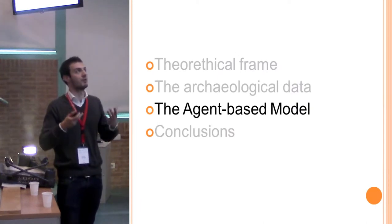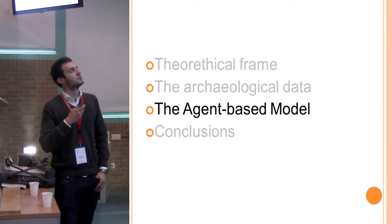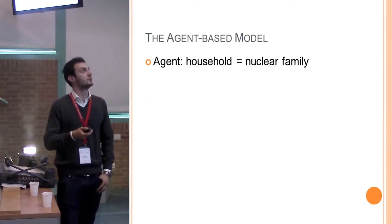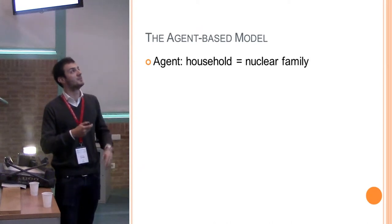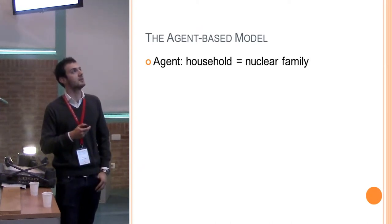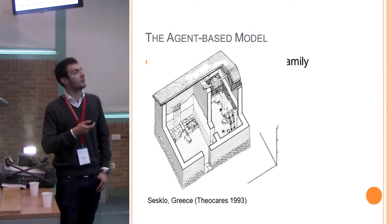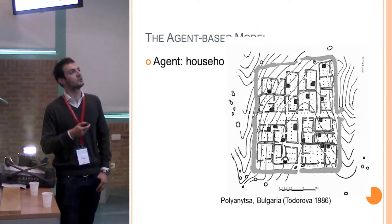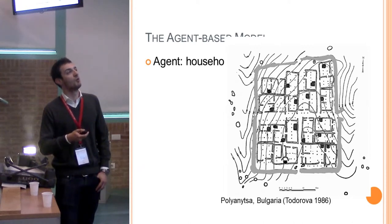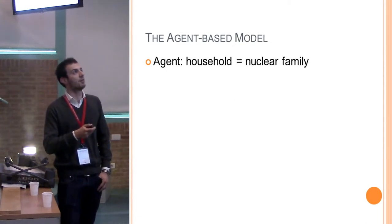I will now describe the core of my work: the agent-based model. The agent chosen to represent is a household. The household is the basic unit that can be found in the archaeological evidence. In this specific case of early Neolithic in the Balkans, the household appears to correspond to a nuclear family. Archaeological evidences — such as the very small size of the households — suggest that they were occupied by nuclear families; they are too small to suggest extended families. So our starting hypothesis is that households host only one nuclear family.